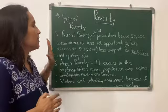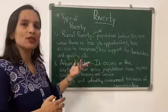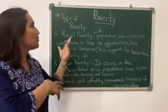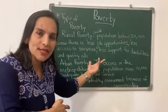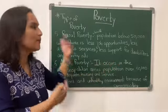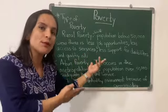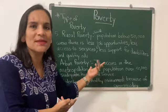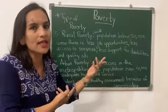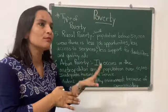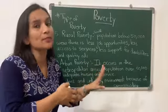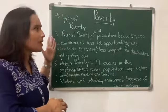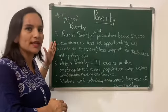Number five is rural poverty. This happens when a population below 50,000 in a village does not have proper job opportunities or services available. There is no support for disabled persons, no proper quality education — or the education available is of inferior quality. These are the reasons why this kind of poverty gets created.